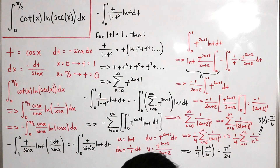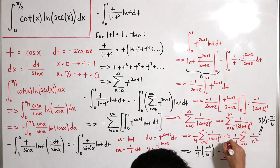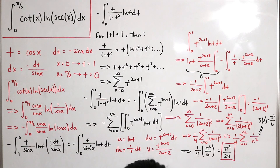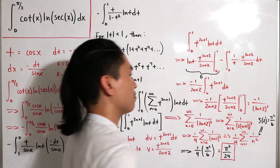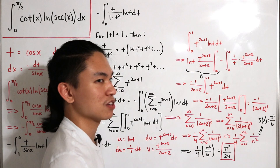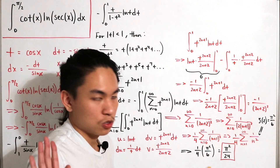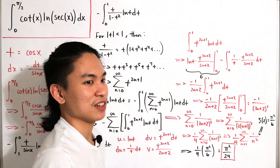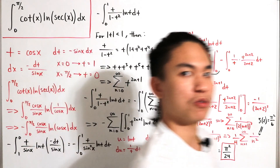And there you have it — the final answer is π²/24, shown in the box. If you had worked this out before watching, great; if not, at least you learned something. That's a pretty cool result.